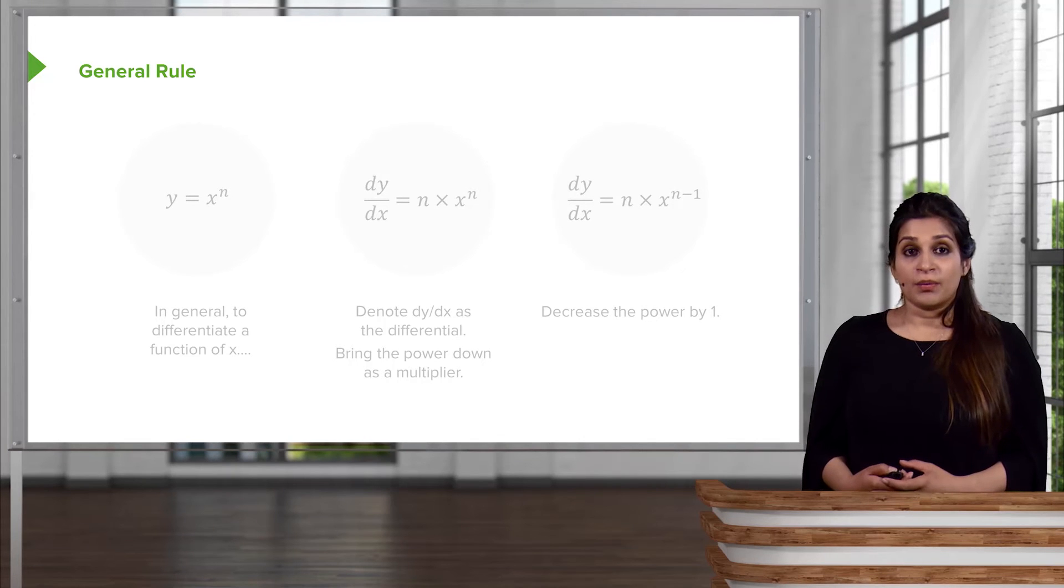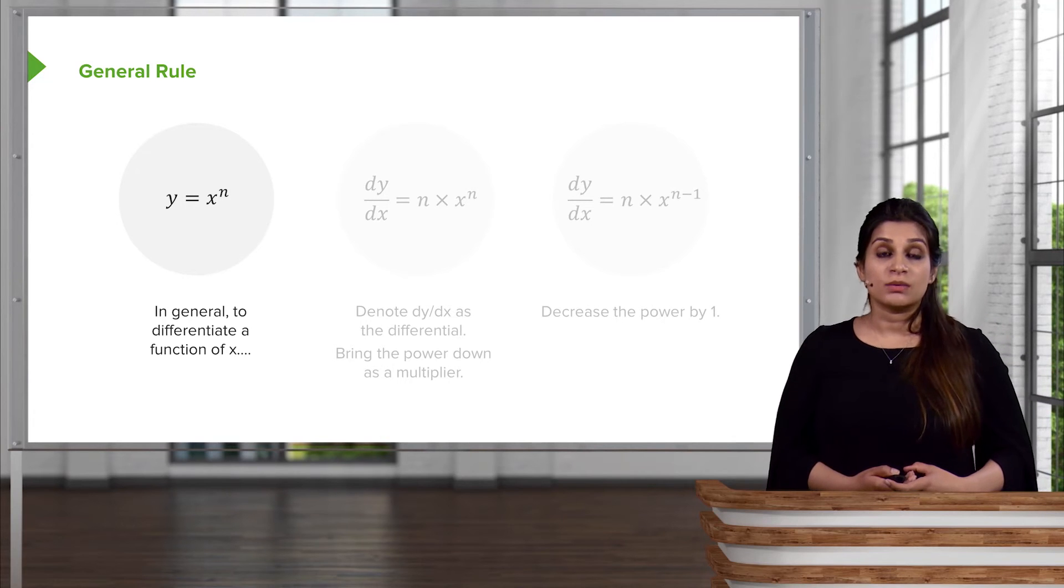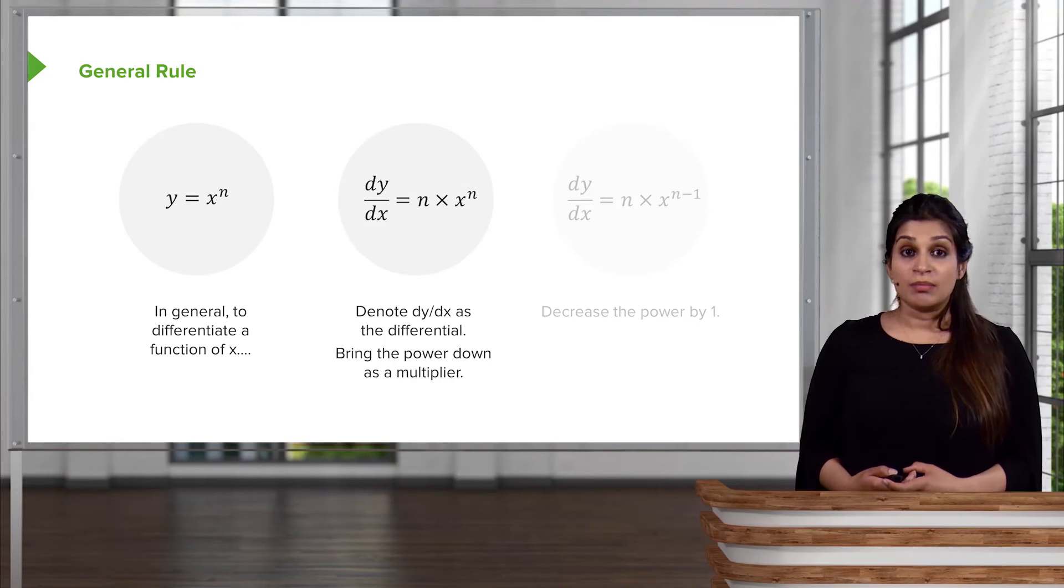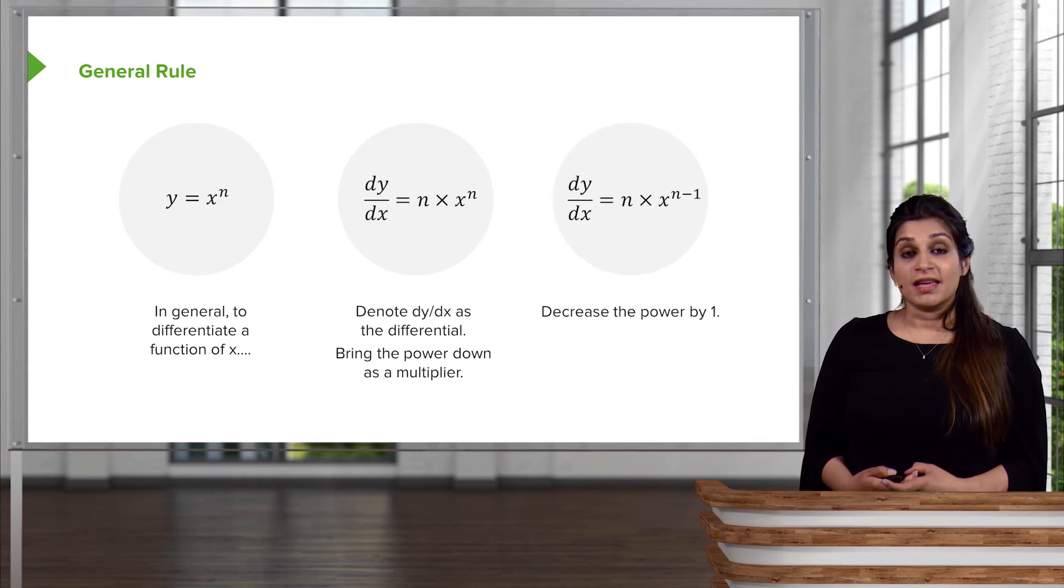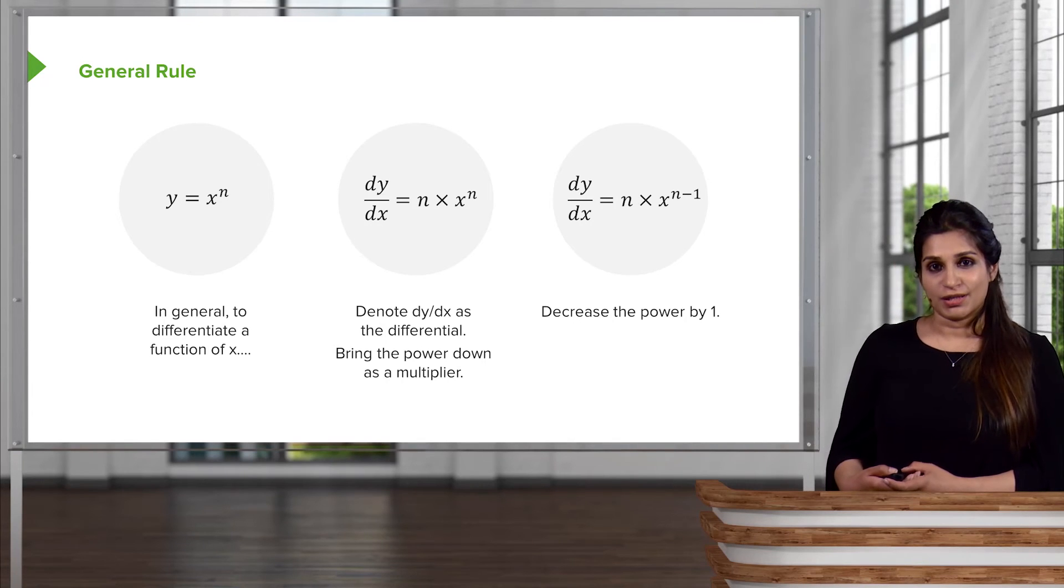As a little recap, we will have a look at the general rule once again. So, if you have a function, y equals to x to the power of n, you bring the power down as a multiple of x to the power of n, as we do here, and then you decrease the power by 1. So the answer will then be nx to the n minus 1.